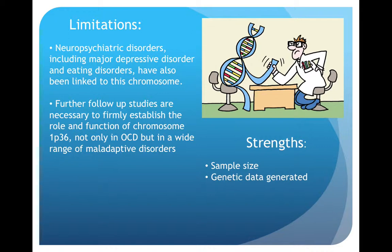These conclusions lean toward an understanding that chromosome 1P36 exists in link with OCD. Yet many other neuropsychiatric disorders, including major depressive disorder and eating disorders, have also been linked to this chromosome, so further follow-up studies are necessary. While there exists a margin of limitation related to heterogeneity due to slight racial or ethnic variation, the major strength of this study was the large participant group size and the genetic data generated. This study establishes chromosome region 1P36 as a new genetic area of interest in the etiological study of OCD.